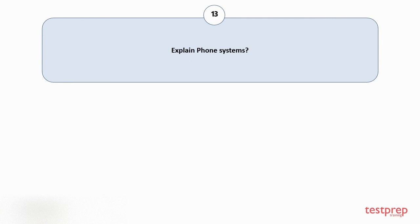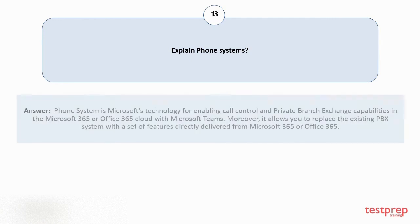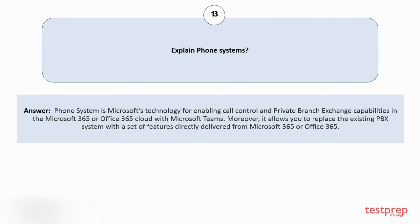Question number 13: Explain phone systems. Phone system is Microsoft's technology for enabling call control and private branch exchange capabilities in the Microsoft 365 or Office 365 cloud with Microsoft Teams. Moreover, it allows you to replace the existing PBX system with a set of features directly delivered from Microsoft 365 or Office 365.